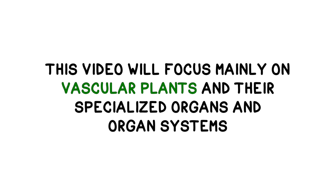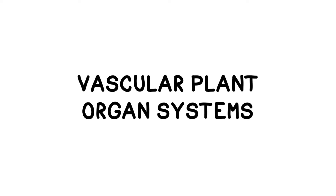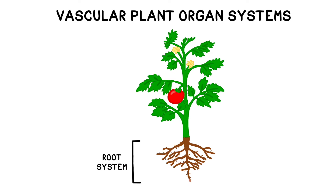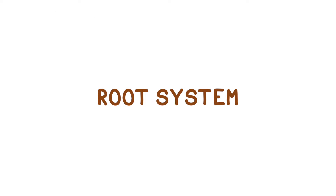This video will focus mainly on vascular plants and their specialized organs and organ systems. Vascular plants have two major organ systems: the root system and the shoot system. The root system is usually mostly underground — it supports the plant and absorbs water and minerals from the environment. The shoot system generally grows above ground, which allows some parts of it to absorb the light needed to perform photosynthesis.